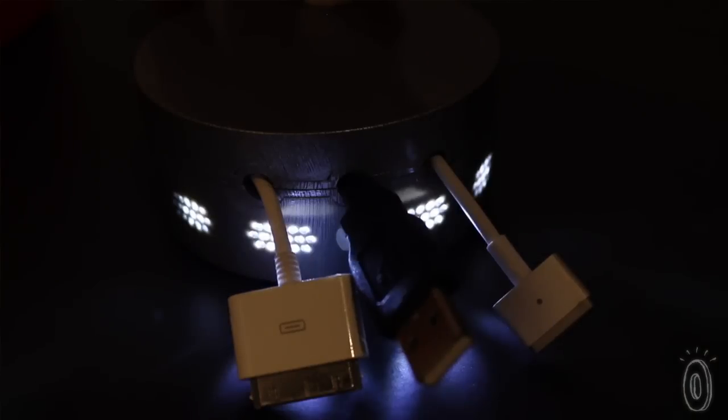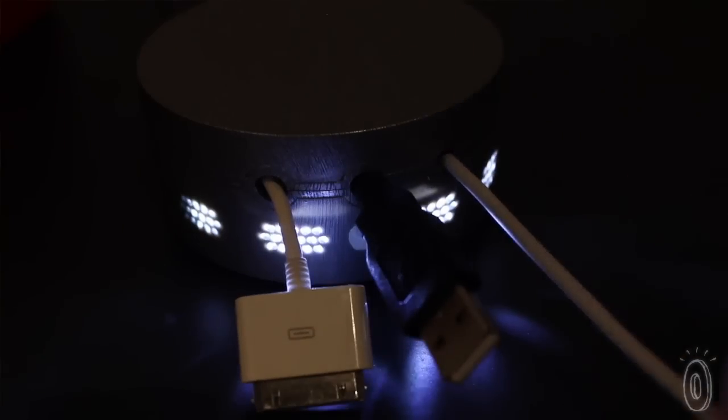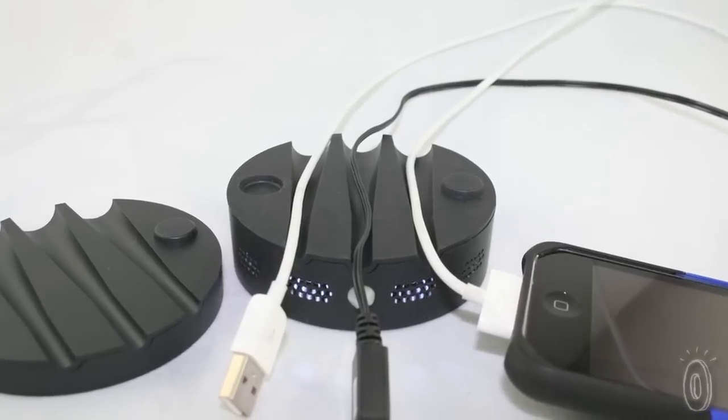The Glow has an LED light that senses motion, so it will glow when it sees you're within eight to ten feet in case you're trying to get to your cords in the dark. It also organizes three different devices, and the cord slots are generously shaped so they'll hold just about any size cord you need.